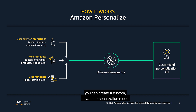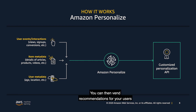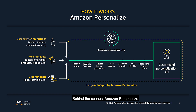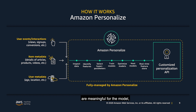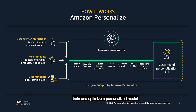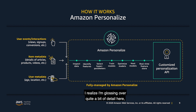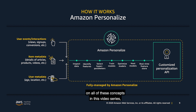We will go much deeper into how and when to use these data ingestion approaches later in this video series. Once you have your data in the service, you can create a custom private personalization model trained and hosted for you in just a few clicks. You can then vend recommendations for your users through a private API. Behind the scenes, Amazon Personalize will automatically process and inspect your data, identify what features in your data are meaningful for the model, select the right algorithms and parameters, train and optimize a personalized model customized to your data, and provide a real-time auto-scaling API that is private to your AWS account where you can get recommendations.